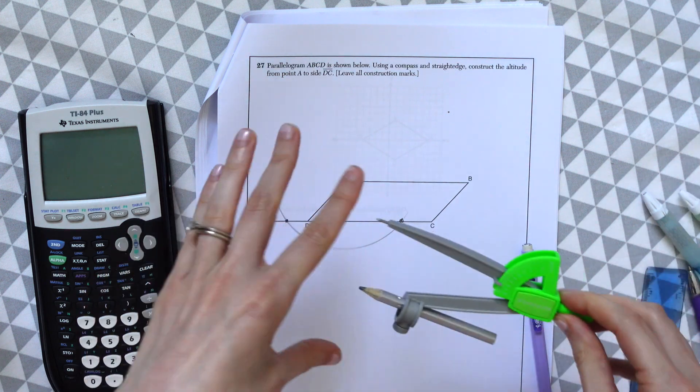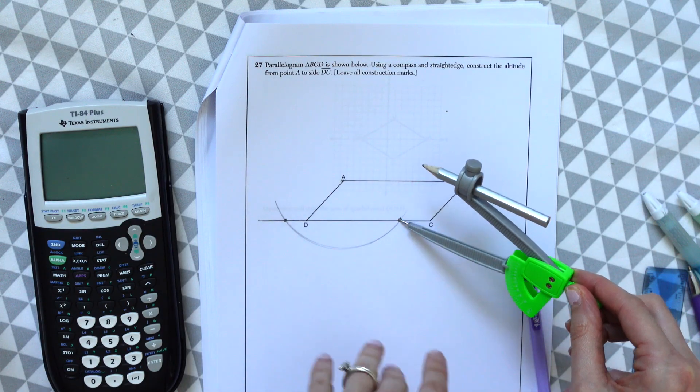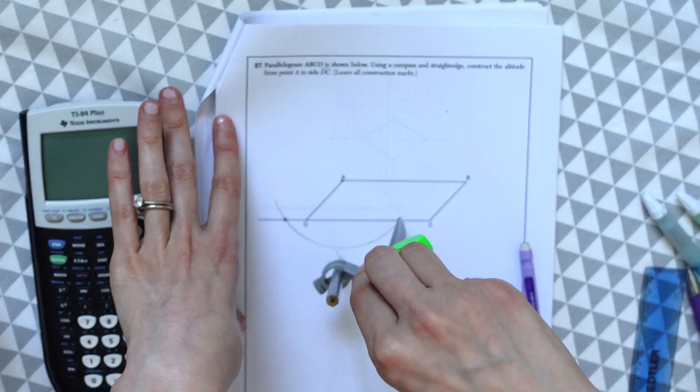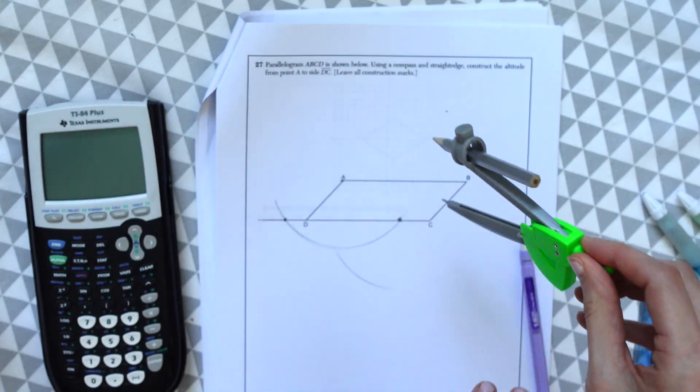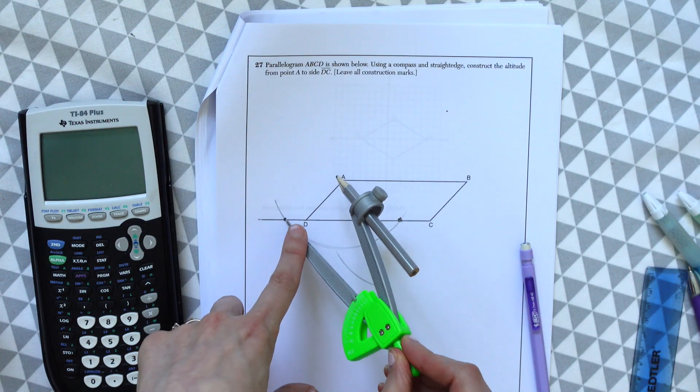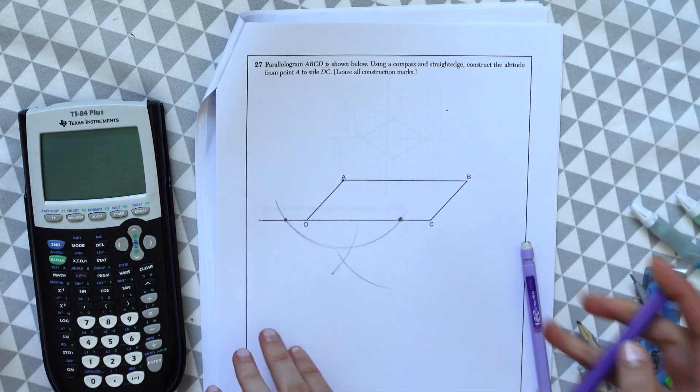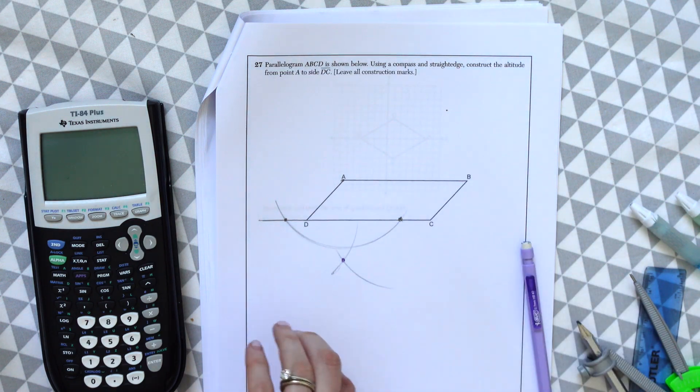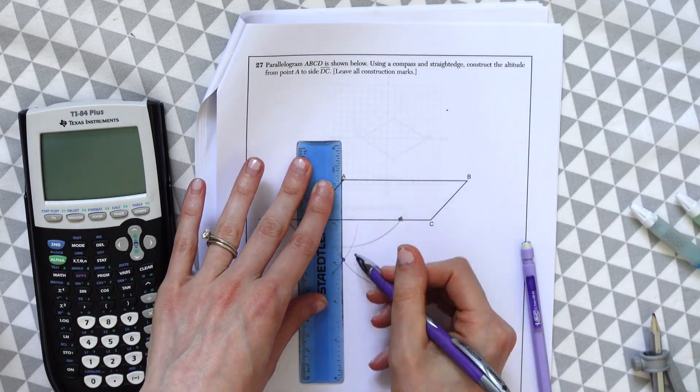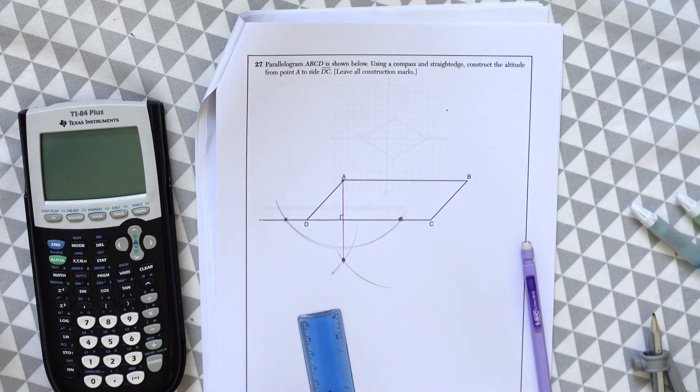Now we're going to take the compass. So I'm just going to take this point of the compass to the point we just made, keeping that same distance of the compass that we just used. And I'm just going to swing the arc, swing an arc below, below our parallelogram. And then I'm going to keep that going to line that up with our original point A and just kind of draw a line. And then this is our altitude. And that's our answer.